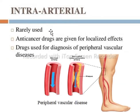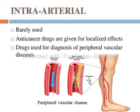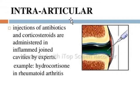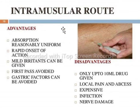The intra-arterial route involves drug administration to an artery rather than a vein. It is rarely used — for example, anti-cancer drugs given for a localized effect, or drugs for peripheral vascular disease, which is a disorder that alters normal blood flow due to atherosclerosis or plaque. Intra-articular administration involves injecting drugs into a joint through a needle — for example, hydrocortisone in rheumatoid arthritis — administered by an expert.